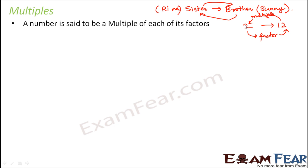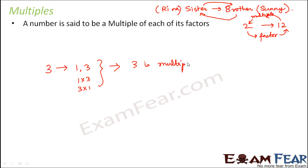Let's understand this with examples. For the number 3, it has two factors: 1 and 3, because 3 can be written as 1×3. This means 3 is a multiple of 1 and also a multiple of 3. Similarly, 4 can be written as 1×4, 2×2, or 4×1, so it has 3 factors: 1, 2, and 4.